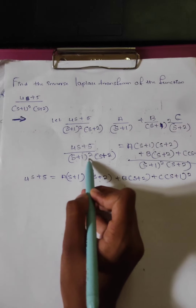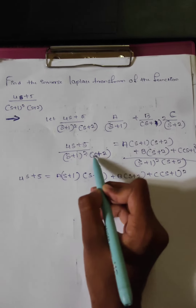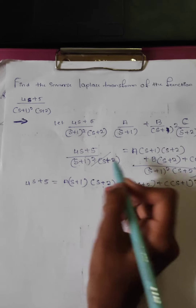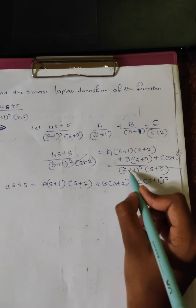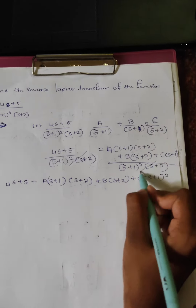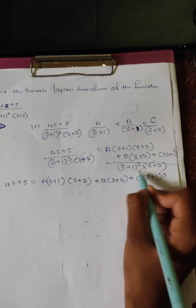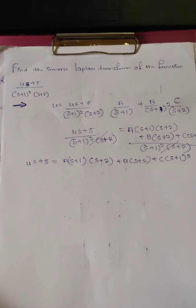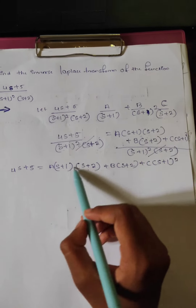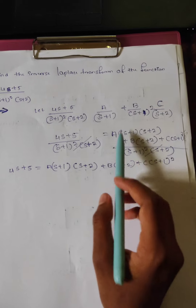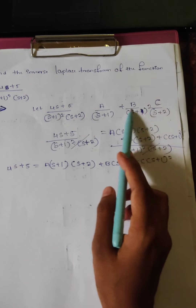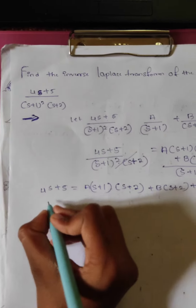Here, canceling (s plus 1) whole square and (s plus 2) appropriately, we find the values of A, B, and C by substituting suitable values of s.